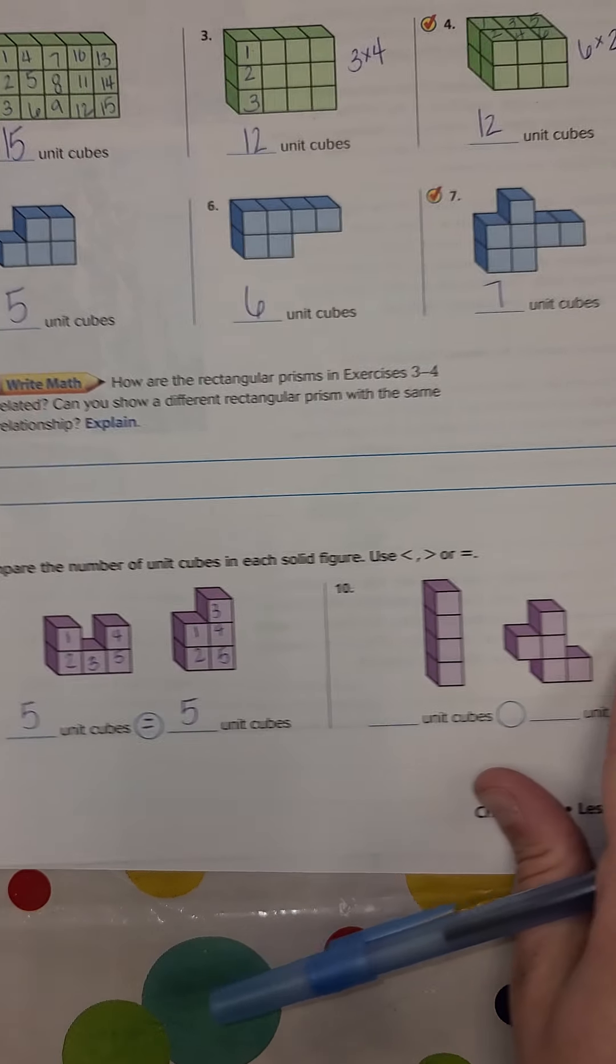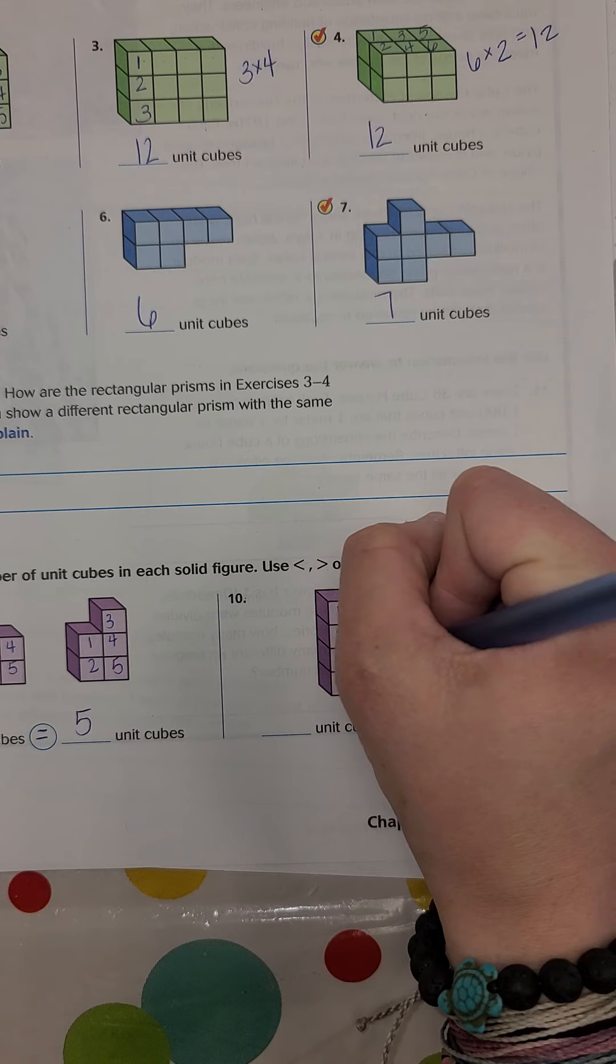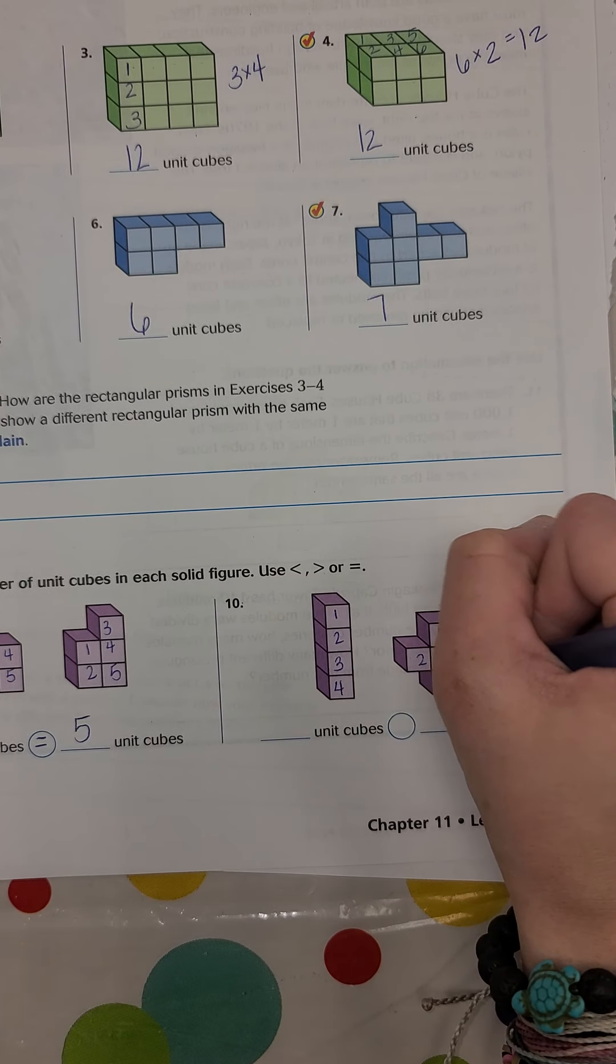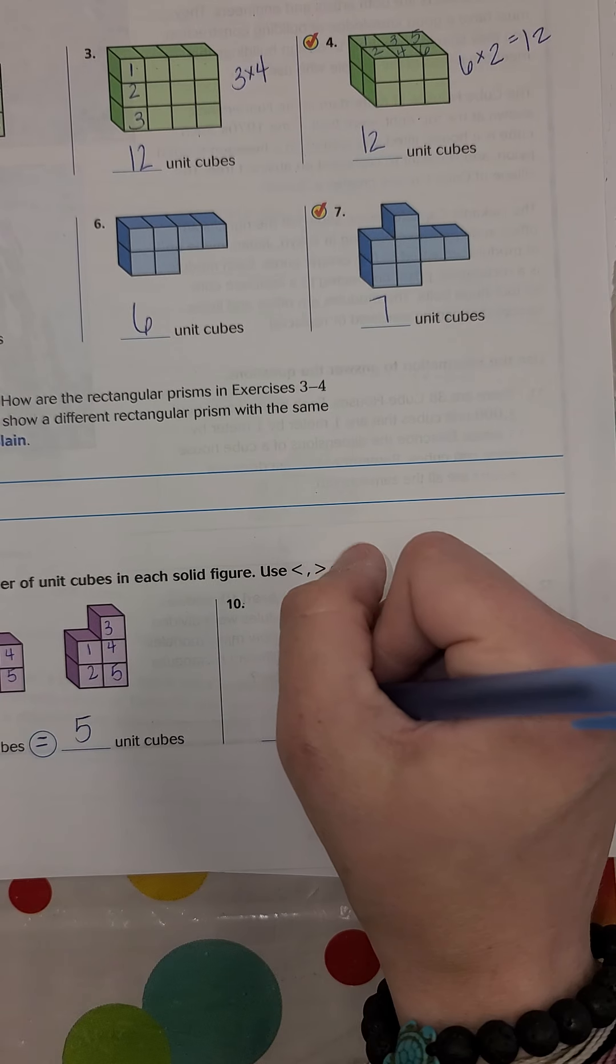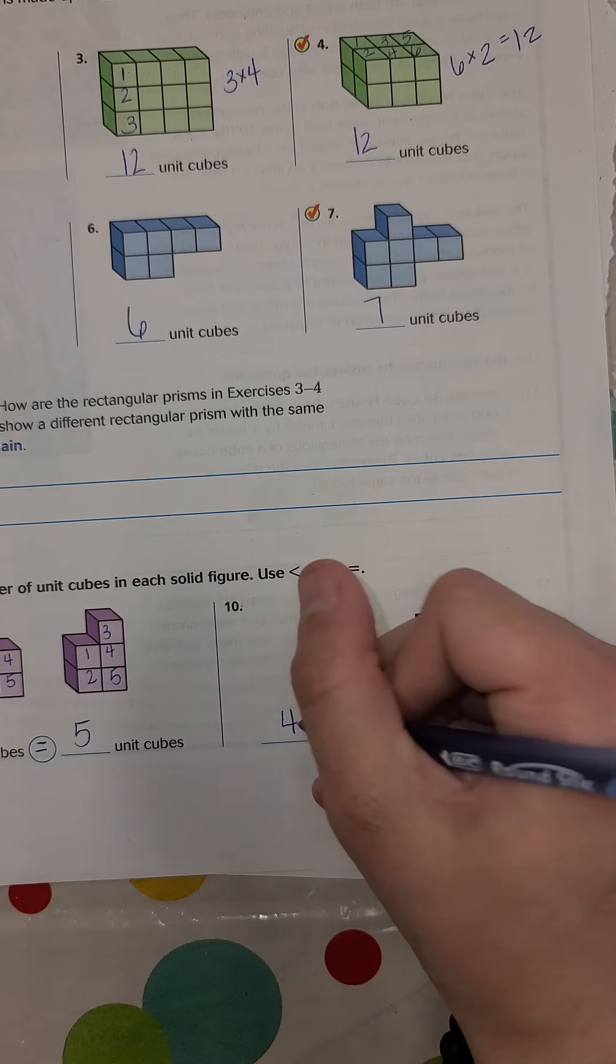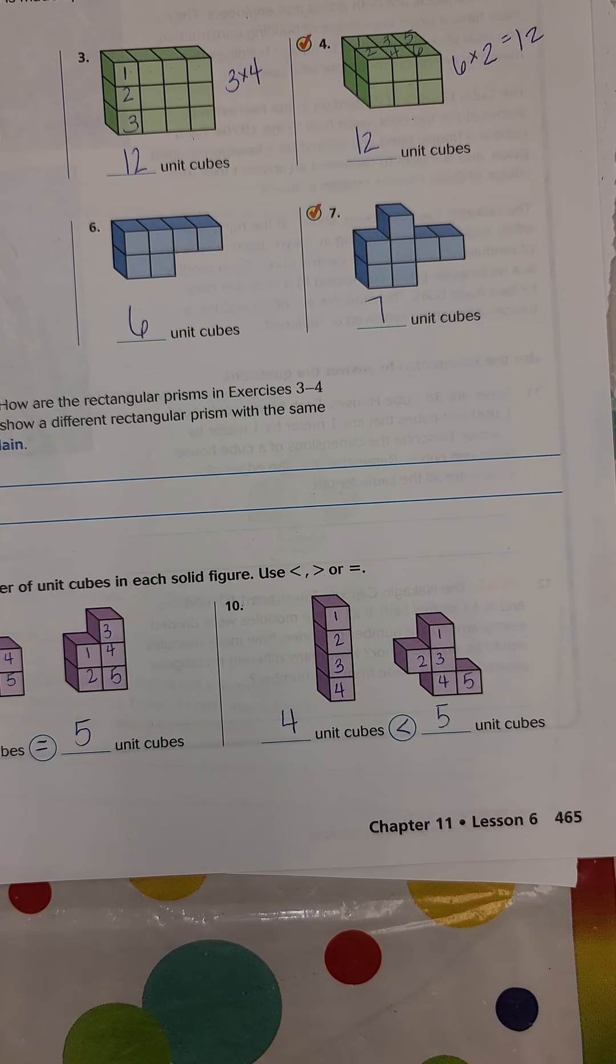Pretty easy, that one. All right, let's look at this next one. We have one, two, three, four, and then we have one, two, three, four, five. So we have four unit cubes over here, five unit cubes over here. So how would we compare them? We know that four is less than five. So that would be our answer.